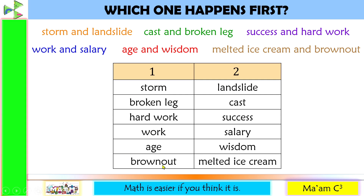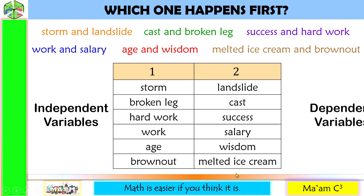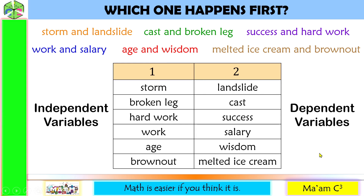The items in column 1 are what we call the independent variables, and the items in column 2 are what we call the dependent variables. Once again, independent and dependent variables comprise a bivariate data.